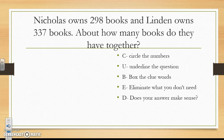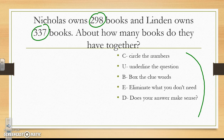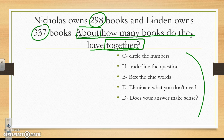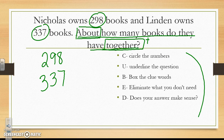Let's try another one. Nicholas owns 298 books and Lyndon owns 337 books. About how many books do they have together? Remember, we are using our CUBE strategy. Nicholas has 298 books and Lyndon has 337 books. I am going to underline the question: 'About how many books do they have together?' Let me box the clue words. 'About' means I need to estimate, and 'together' tells me I need to add. I don't have any unnecessary information, so I skip that step.